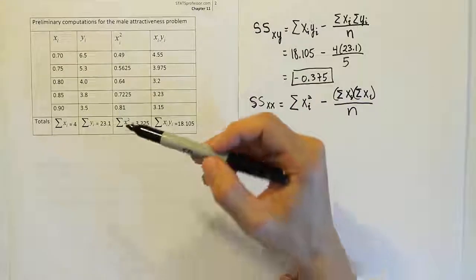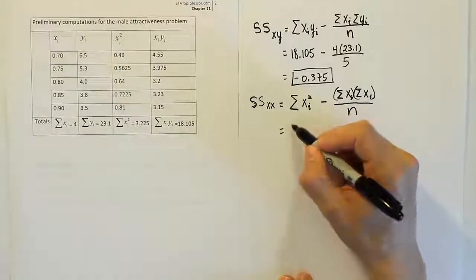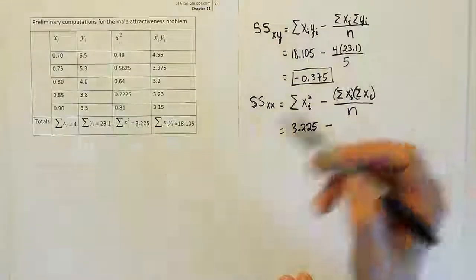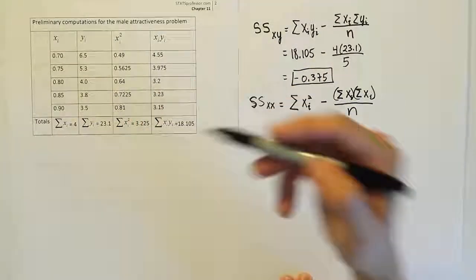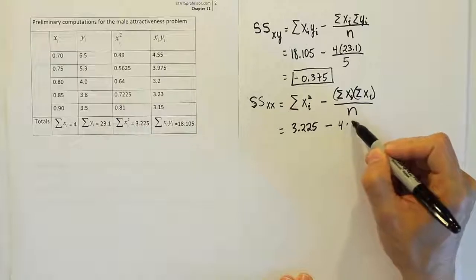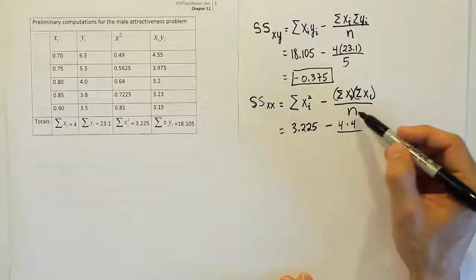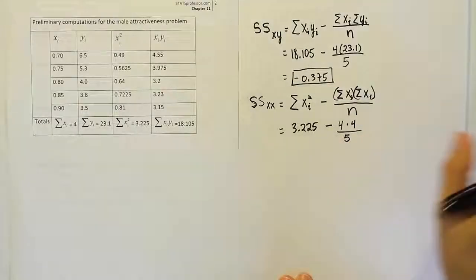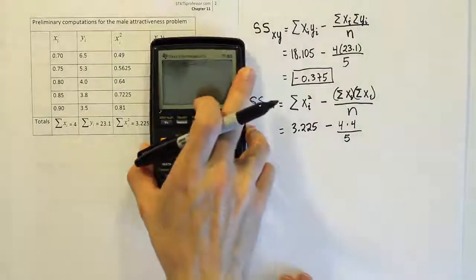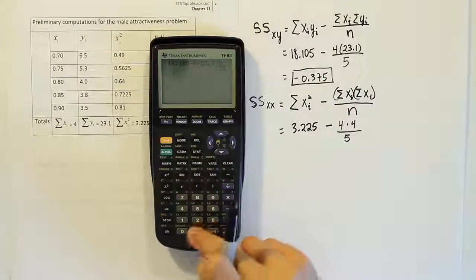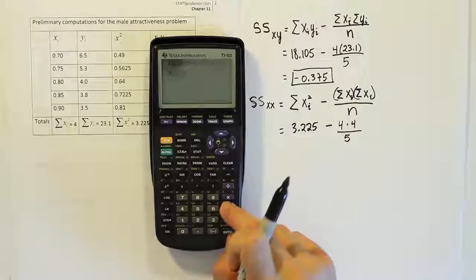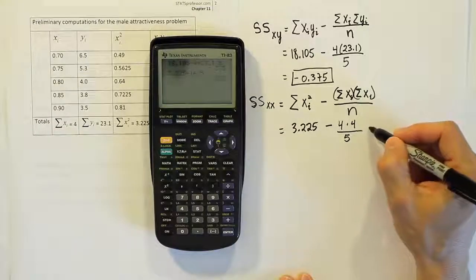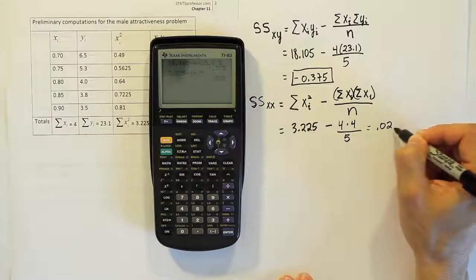The sum of xi squared was given to us as 3.225, minus these two quantities which are the same, the sum of the xi values, that's 4 times 4 or 16, divided by n which is 5. We're going to work that out quickly. So 3.225 minus 16 divided by 5, and we get the answer 0.025.